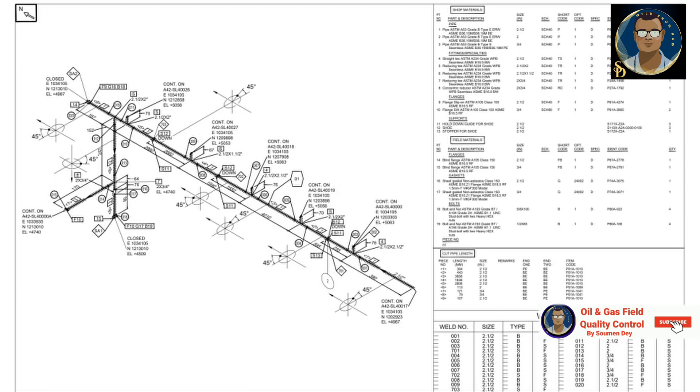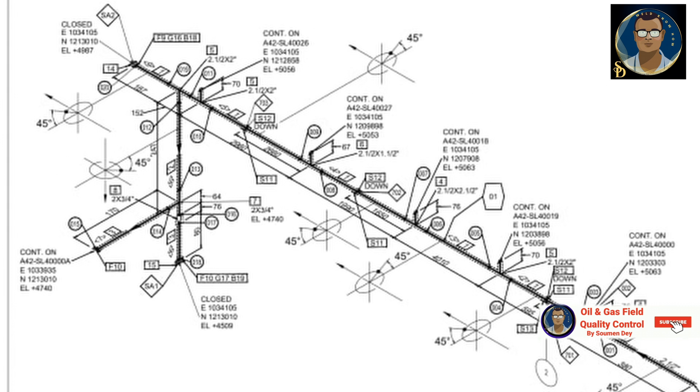Isometric drawing is not drawn to scale, but it is proportionate with the exact dimensions represented. Piping are drawn with a single line irrespective of the line sizes.